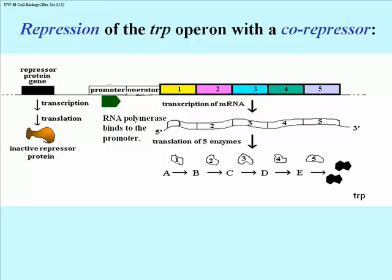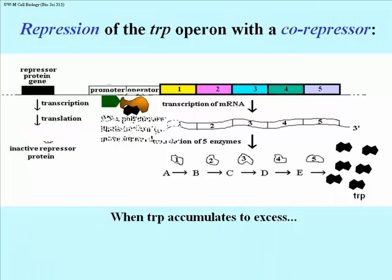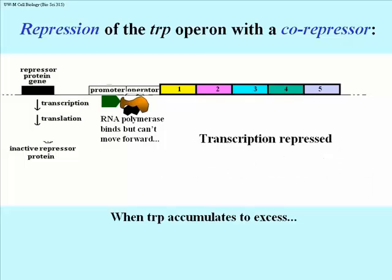Here we have the trp operon with the repressor gene to the left, the repressor protein present but inactive, and RNA polymerase seated on the promoter. When tryptophan accumulates to excessive amounts — when the cell has enough tryptophan — tryptophan molecules bind to the inactive repressor and activate it by changing its shape. The repressor now has a stronger affinity for the operator and binds to it, blocking RNA polymerase from moving forward and repressing transcription. In this case, tryptophan is referred to as a co-repressor, because it is part of the repressor-tryptophan complex that binds to the operator.